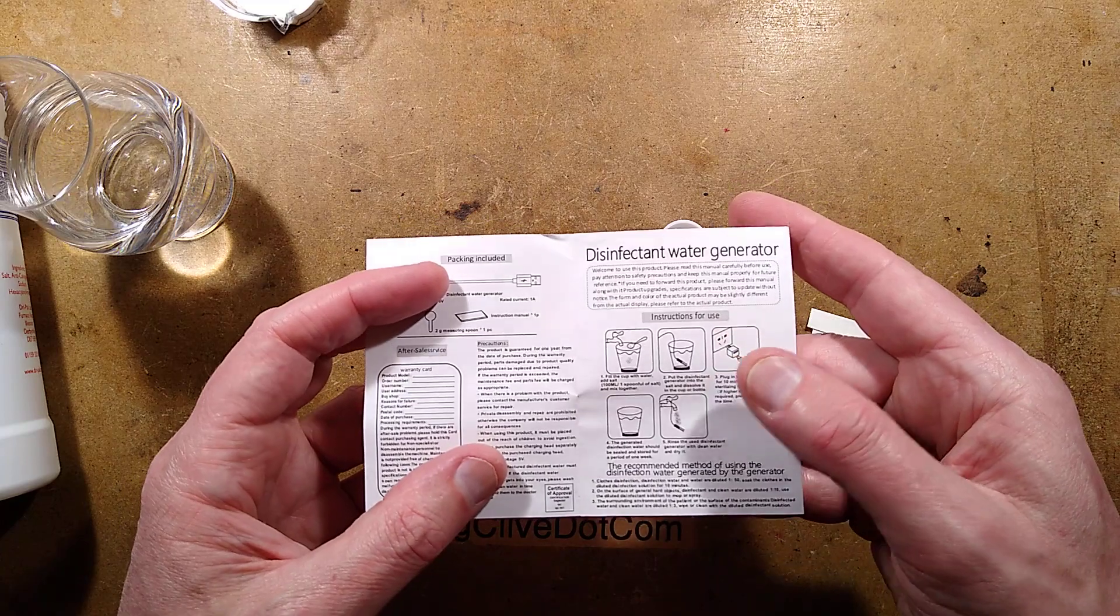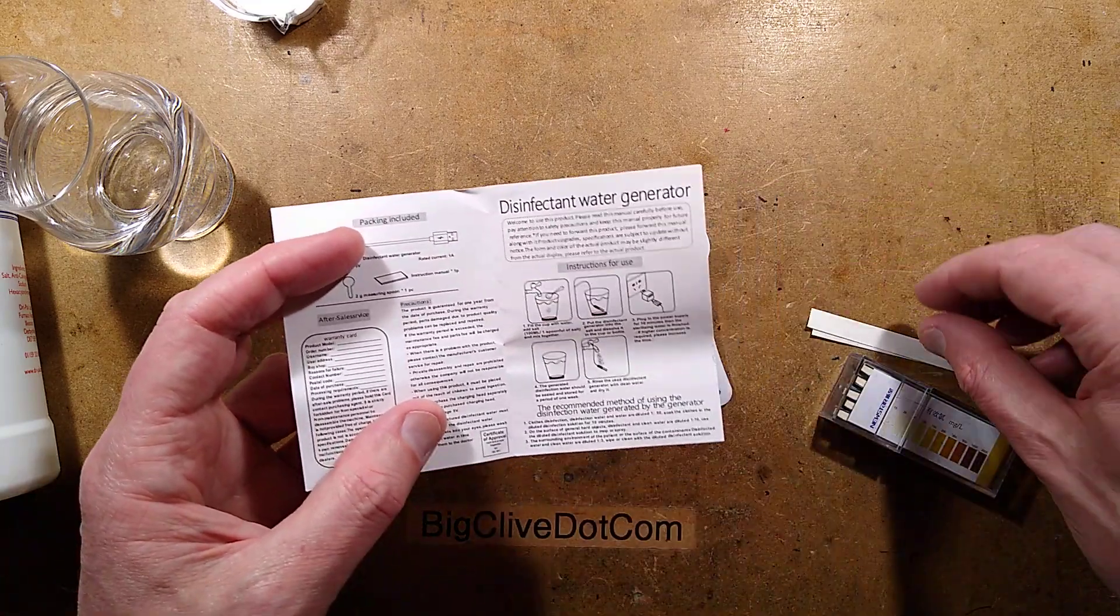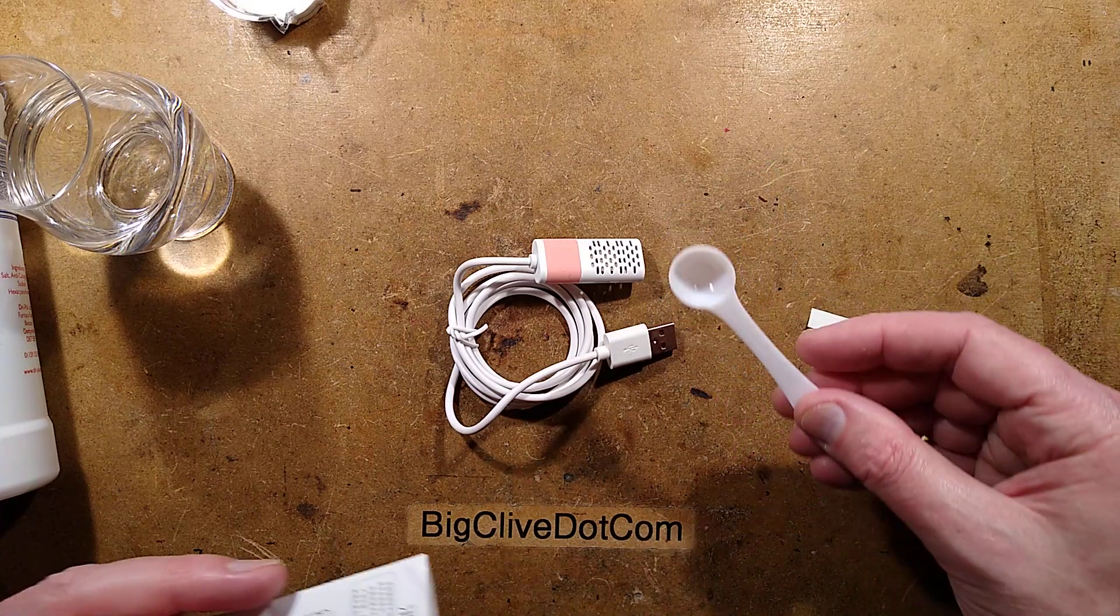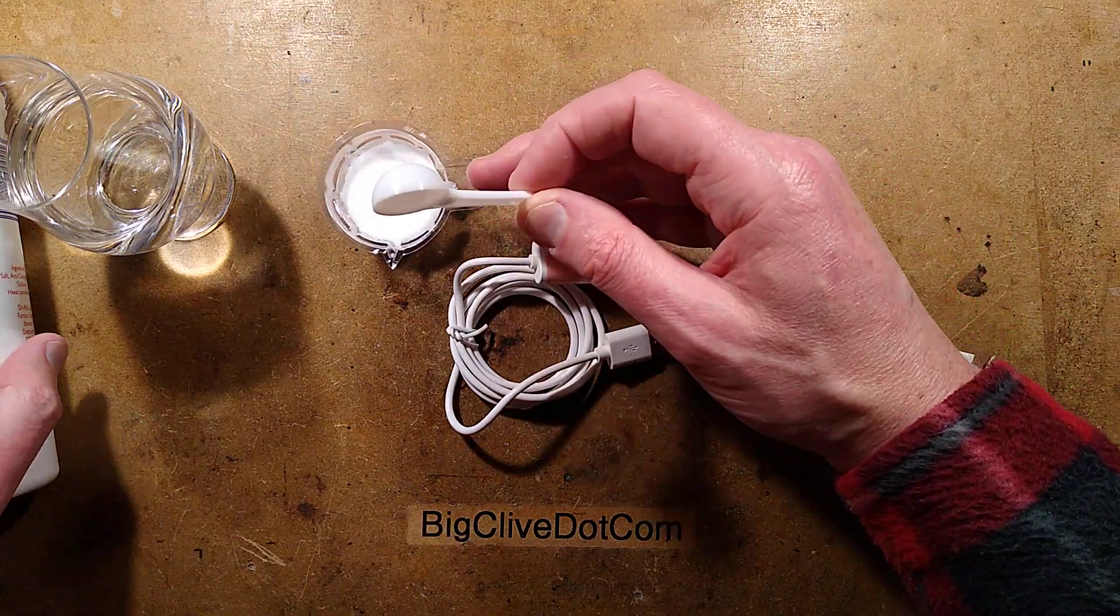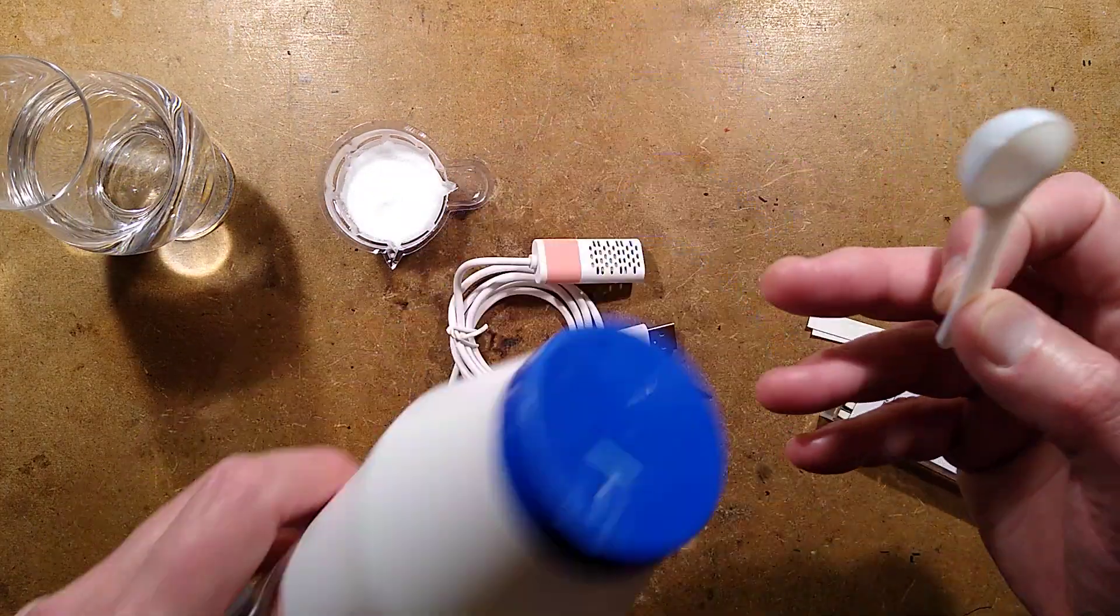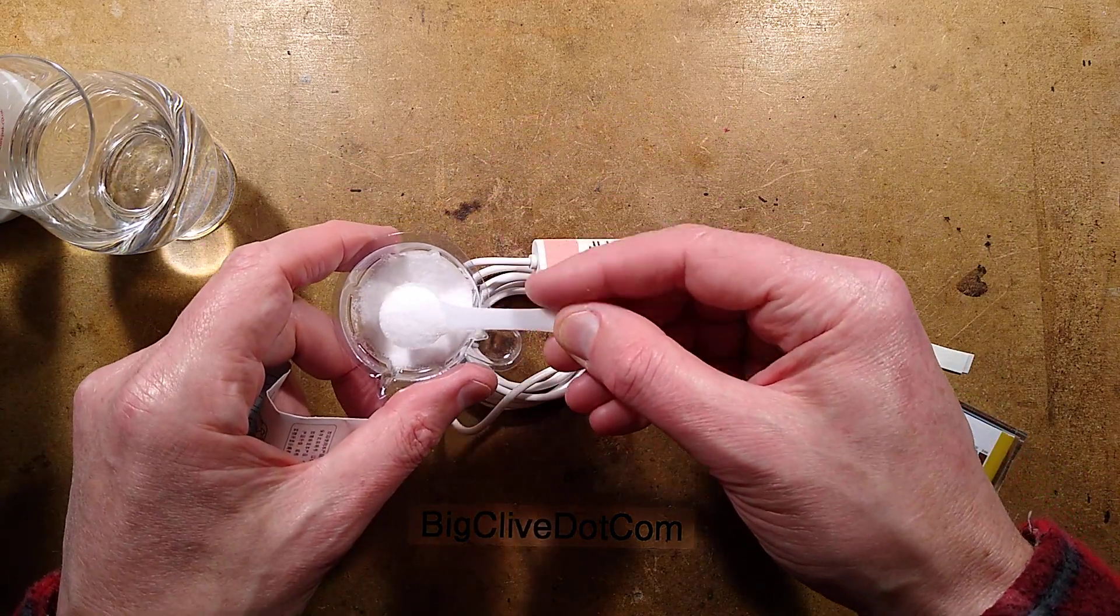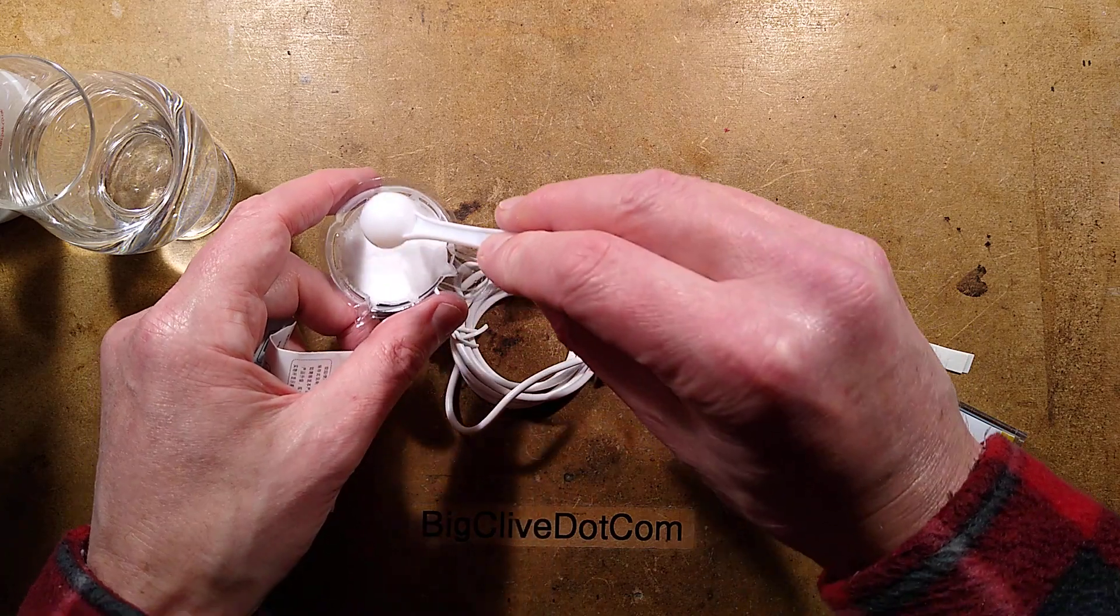For every 100 milliliters add one scoop of salt. I've measured the scoop with table salt and the scoop actually measures three grams, so they suggest two percent salt. This is actually making a three percent solution.